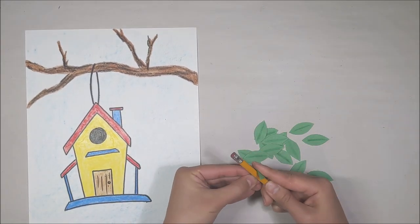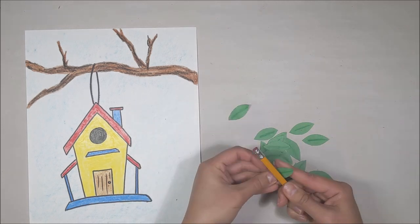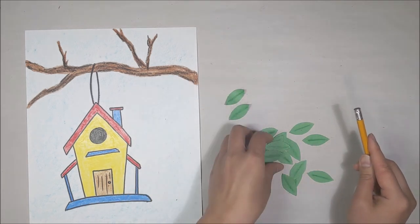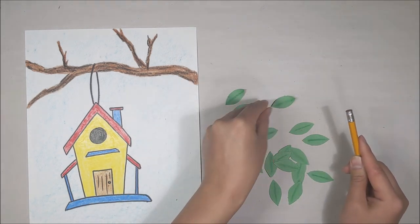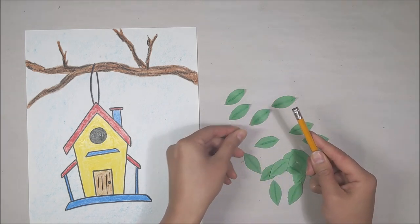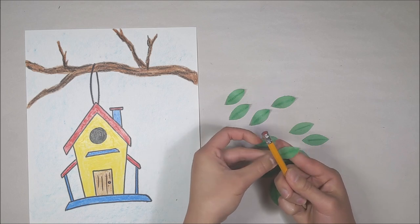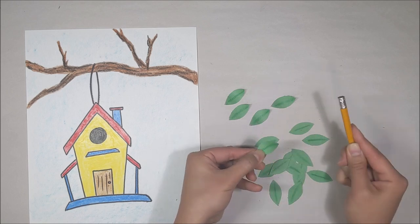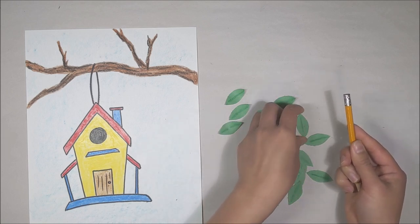To make it more fun and more 3D, we're going to curl in one end of each leaf. Holding the pencil like so, place each leaf between the pencil and your index finger. Press the leaf against the pencil and with your other hand, pull it from underneath the pencil.